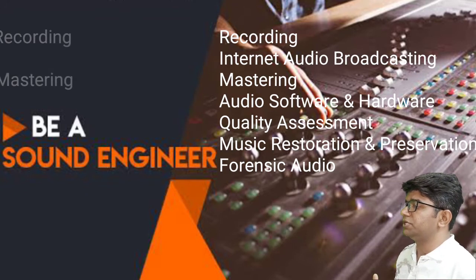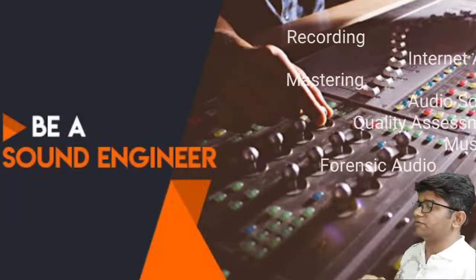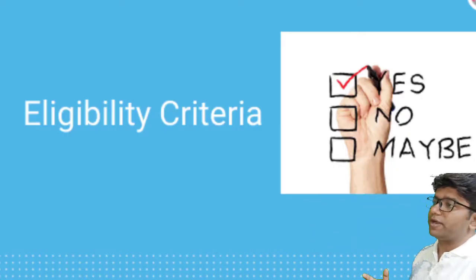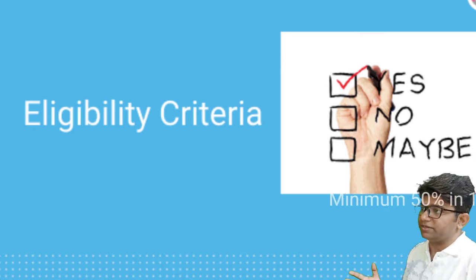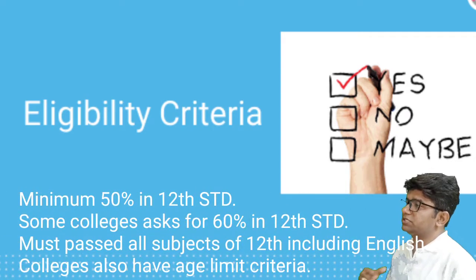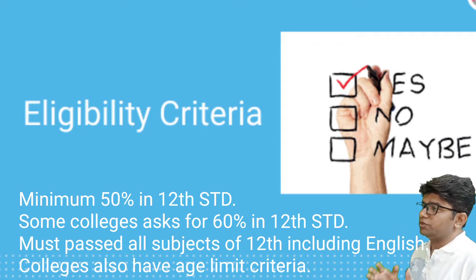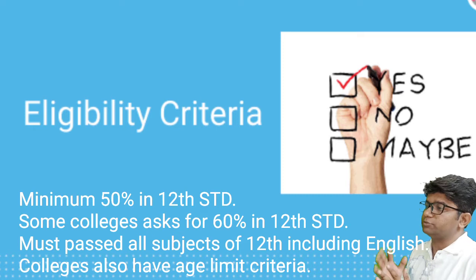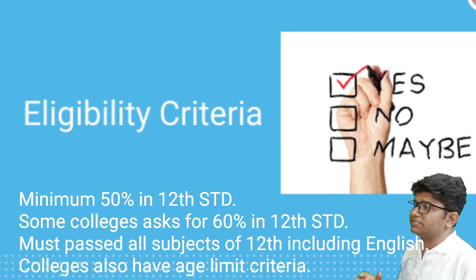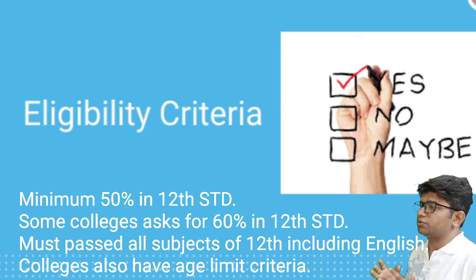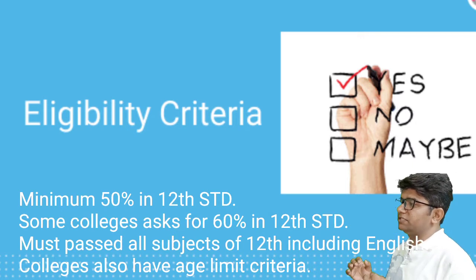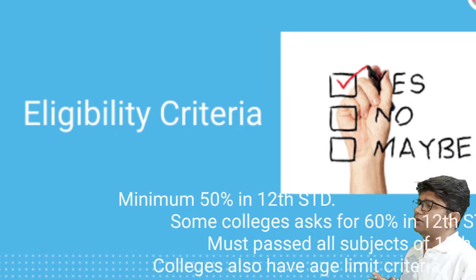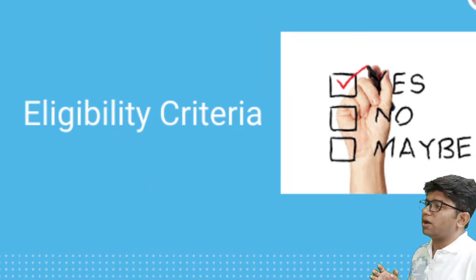These are the career scopes in sound engineering: recording, internet audio broadcasting, mastering CDs and DVDs, live sound, audio software and hardware, quality assessment, music restoration and preservation, and forensic audio. To get into a reputed college offering a degree in sound engineering, your 12th standard aggregate marks should be 50% and above — some colleges expect 60%. You must have passed class 12 senior secondary examination with at least 50% marks including English. Some universities also have an age limit. Sound engineers are also called audio engineers.